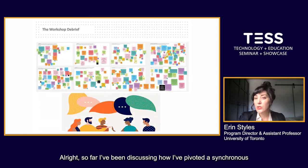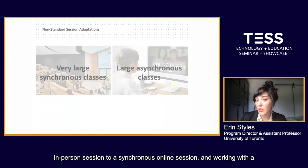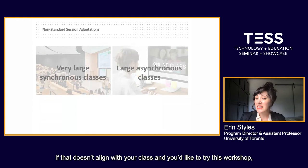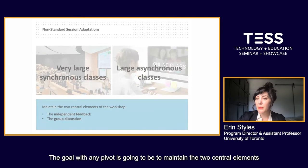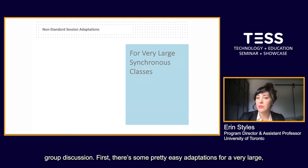So far I've been discussing how I've pivoted a synchronous in-person session to a synchronous online session, working with a relatively small group of students — ideally less than 50. If that doesn't align with your class and you'd like to try this workshop, here are a couple of options. The goal with any pivot is going to be to maintain the two central elements of the workshop: the independent feedback first, followed by the take-up and group discussion.